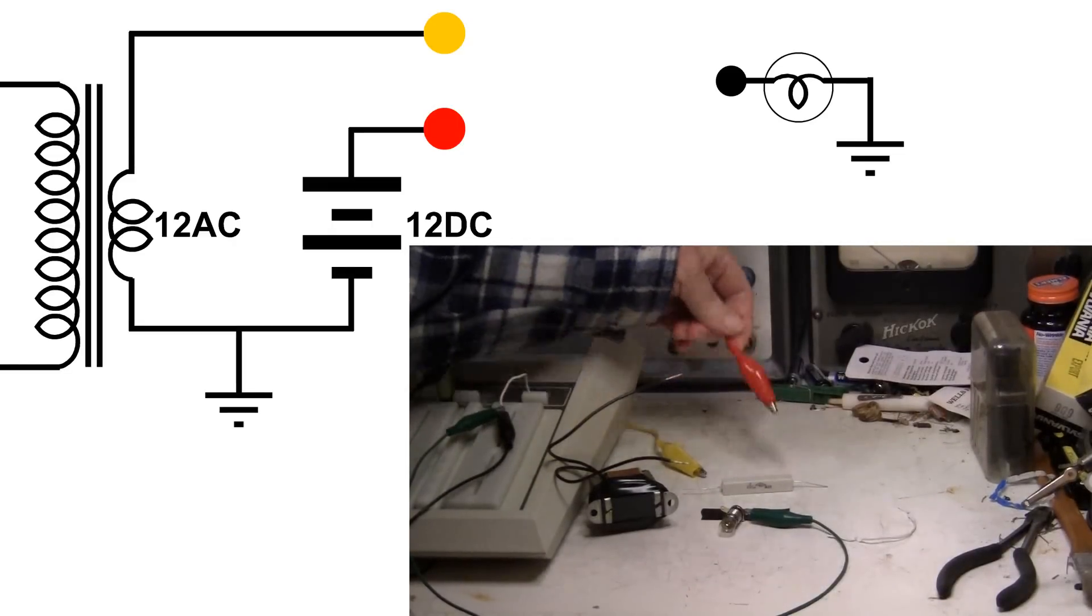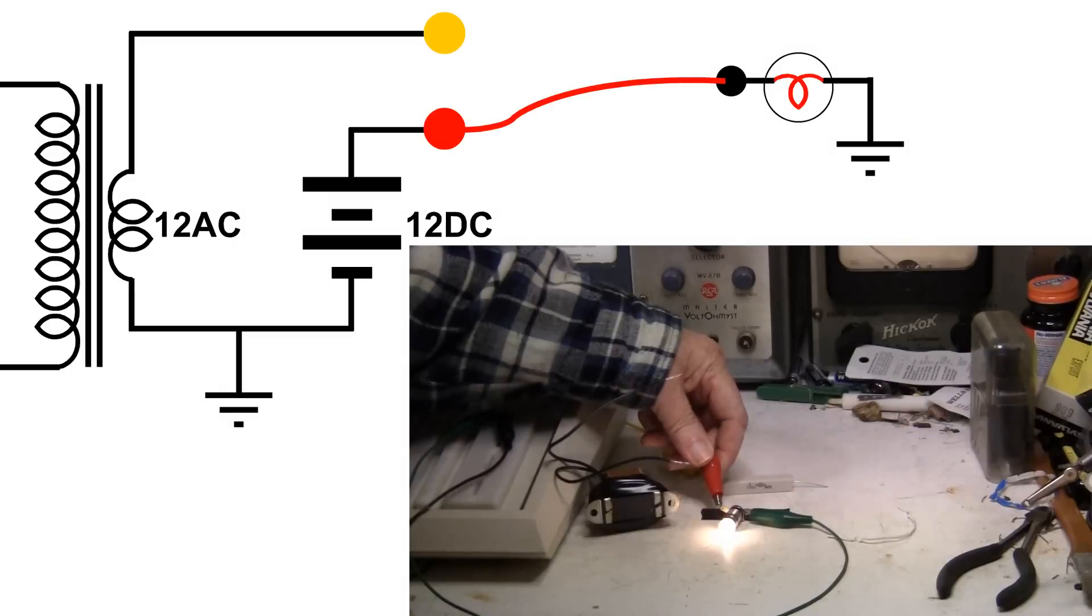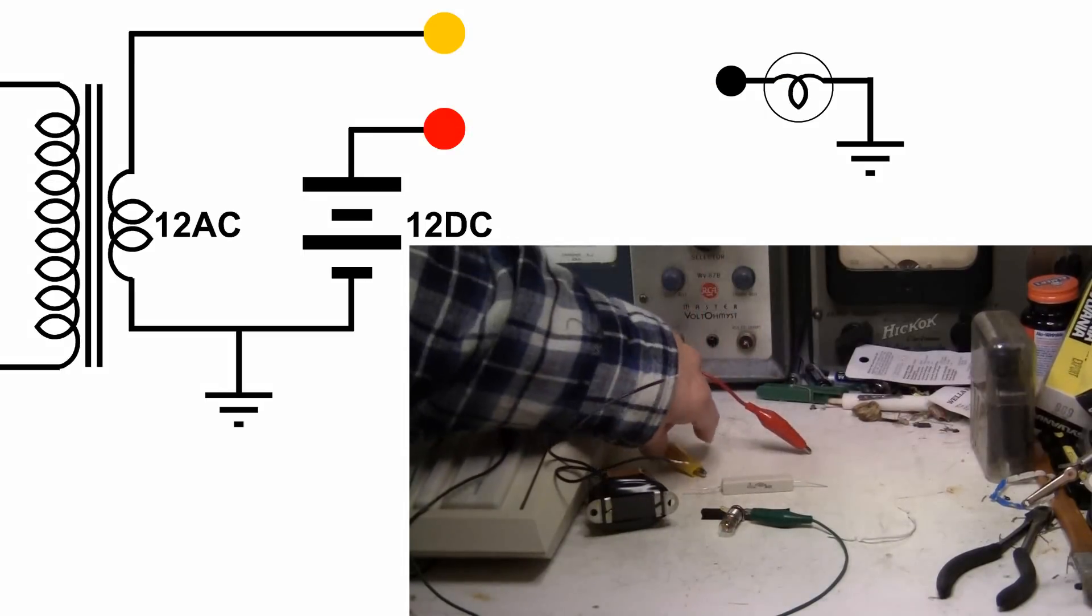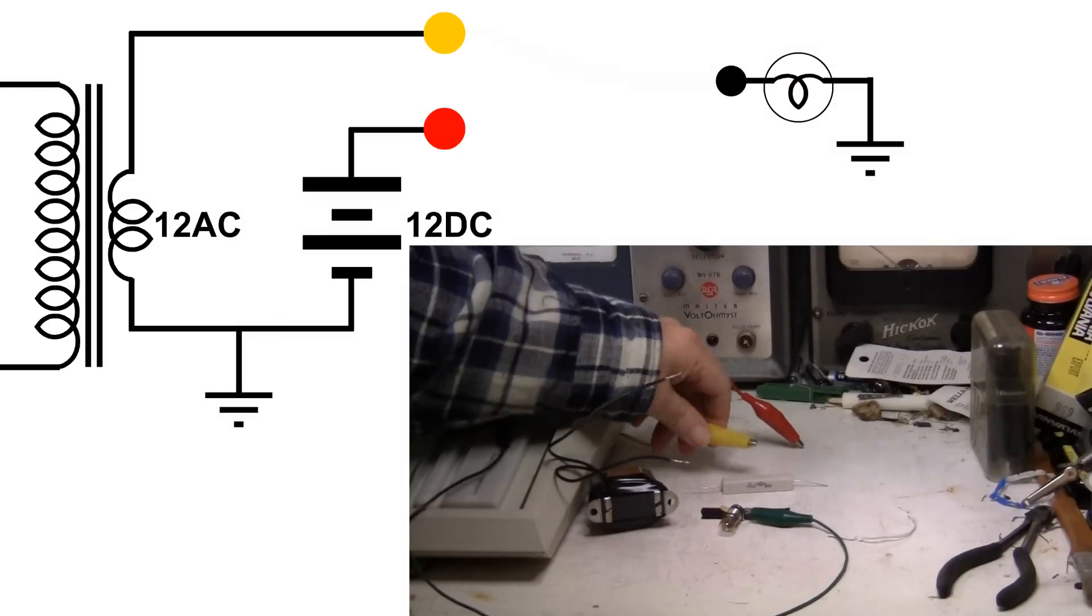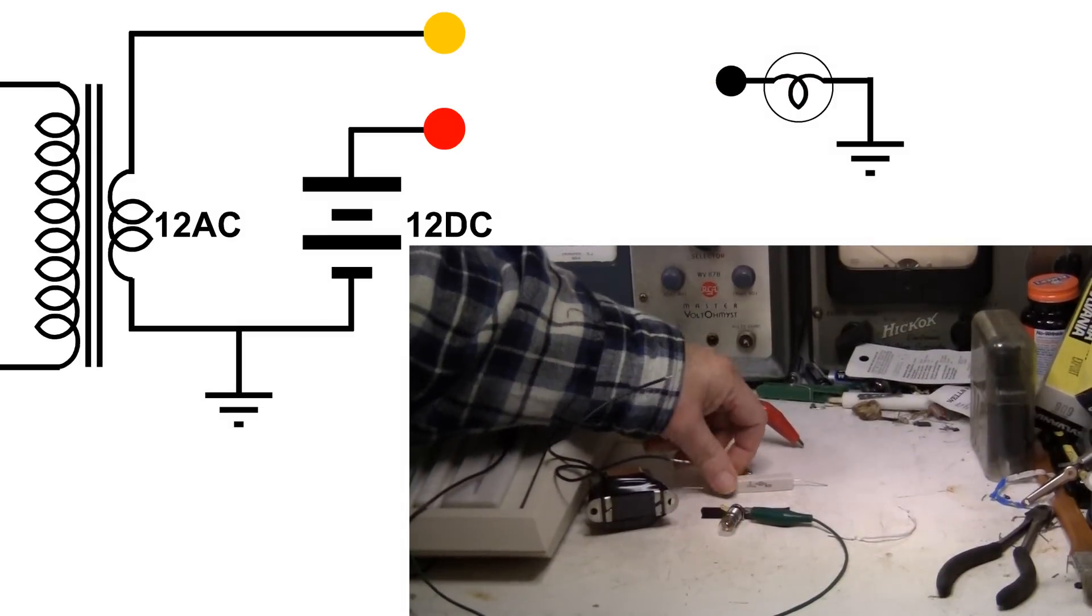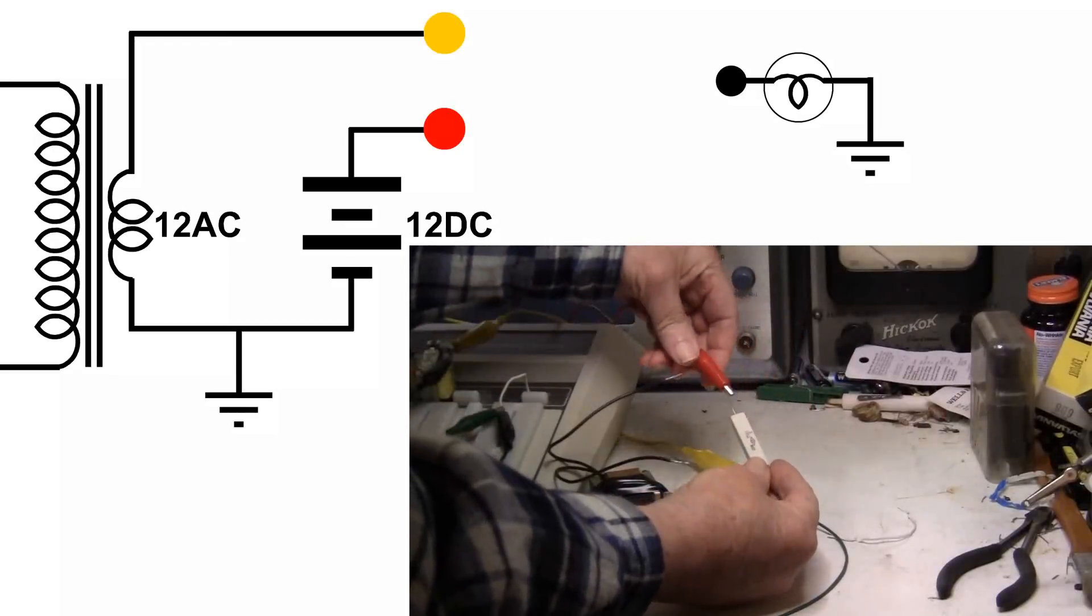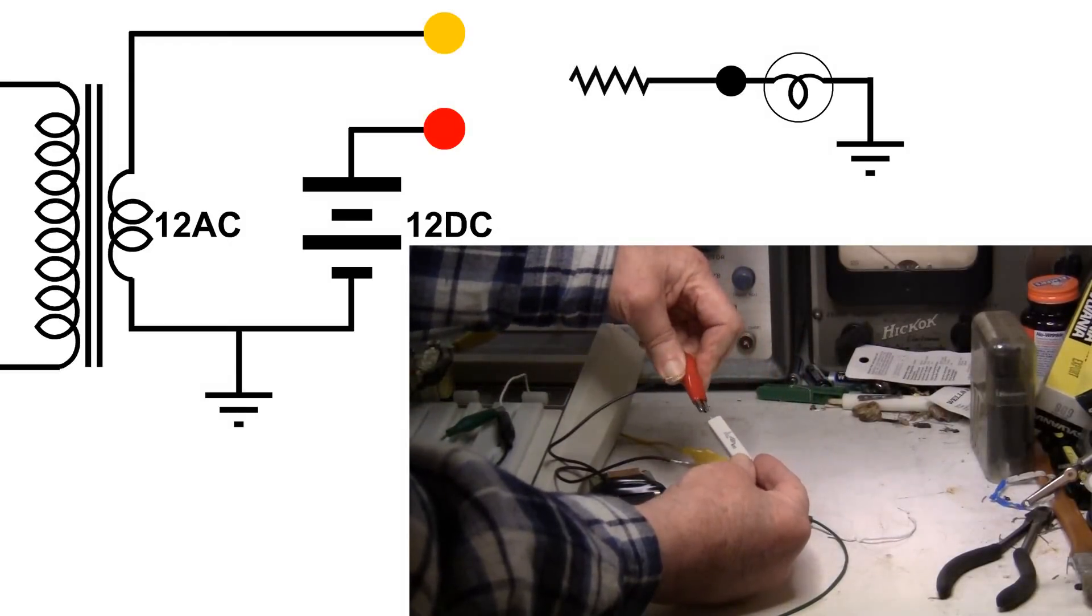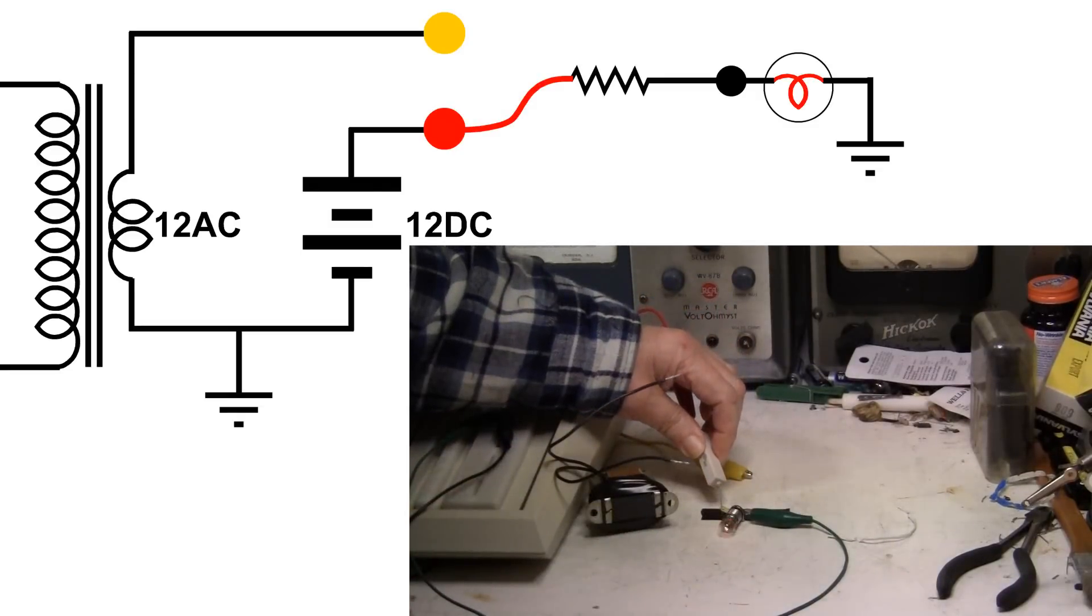Okay, here's our 12 volts DC. Here's our 12 volts AC. And let's start with the DC, 75 ohm resistor. Of course it doesn't light up as bright.